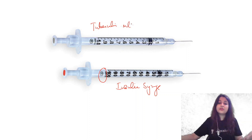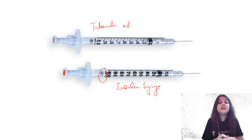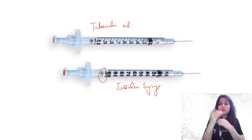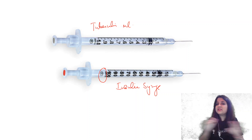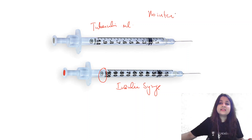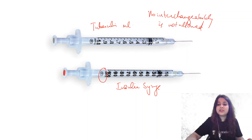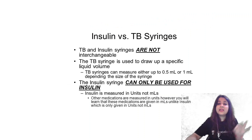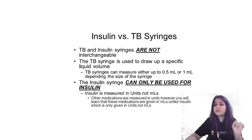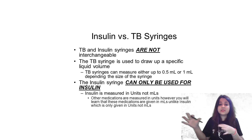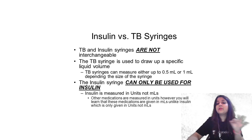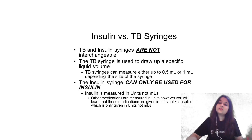That's how you can differentiate them. One more question they ask: can you exchange the tuberculin syringe and insulin syringe? No — no interchangeability is allowed. It's also written here: TB and insulin syringe are not interchangeable. The TB syringe is used to deliver a specific liquid volume measured in mL, while the insulin syringe can only be used for insulin and is measured in units.